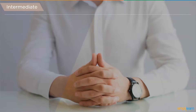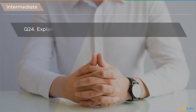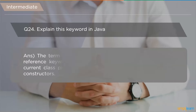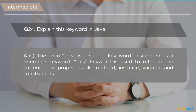The next question is: explain the 'this' keyword in Java. The term 'this' is a special keyword designated as a reference variable. It is used to refer to the current class properties like data-manipulating methods, instance data members, and constructors.